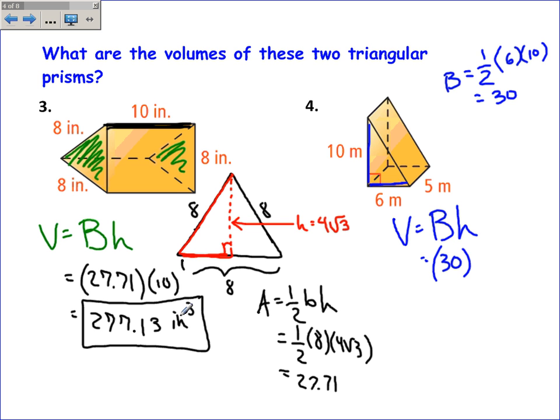Now, I know it's really tempting to use 10 as the height, but it's the perpendicular distance in between the two triangles. And so it's 5. So the volume of this triangular prism is 150 cubic meters.